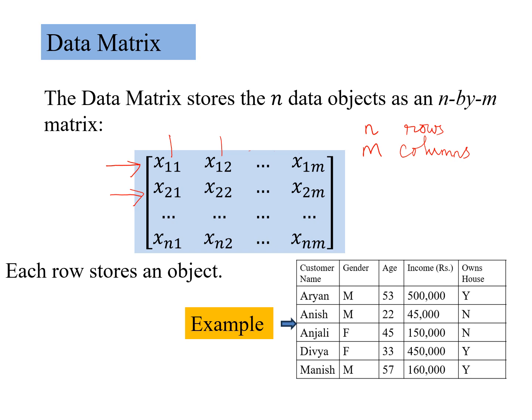For example, suppose we have this table of 5 data objects which are 5 people, and we have certain attributes defining each of these people.